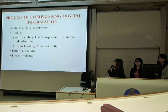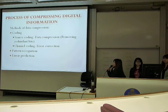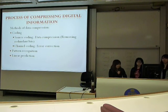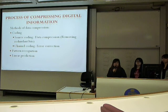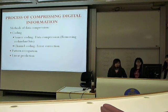How is compression done? I am going to tell you the process of compressing digital information. There are several methods of data compression, and the first one is encoding. There are two steps in encoding. The first is source coding, which aims at removing the redundant bits. The second step is channel coding, which aims at removing the error.